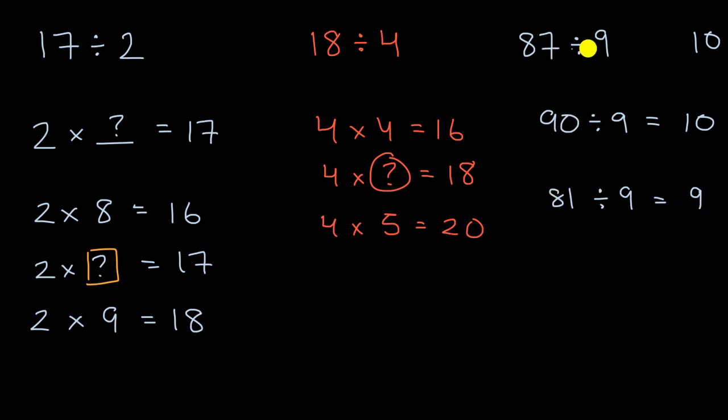And so 87 divided by 9 is in between these two values. Let me do this in another color. So 87 divided by 9 is going to be something in between 9 and 10. And so it is going to be less than 10.